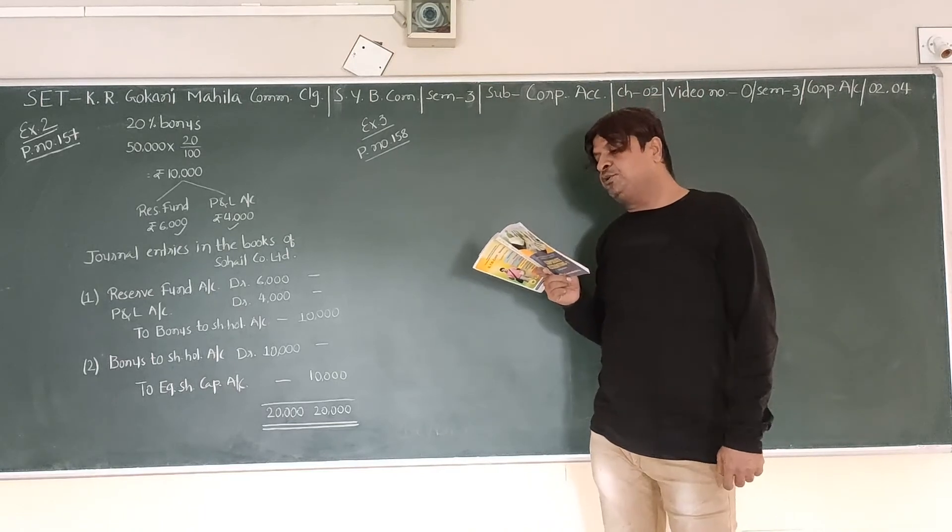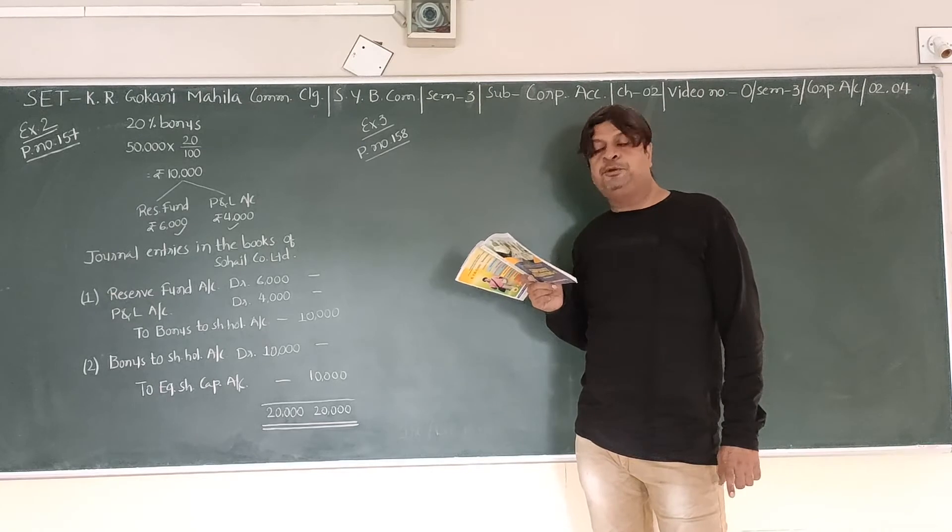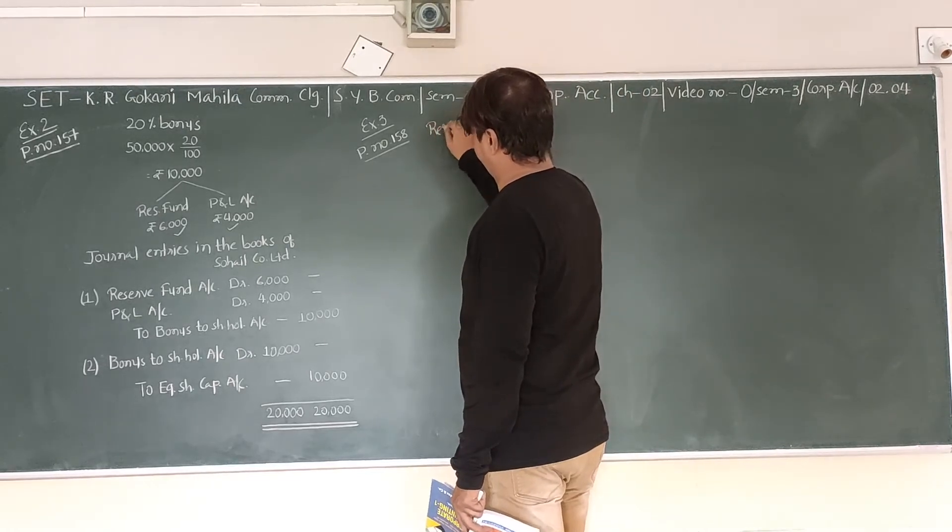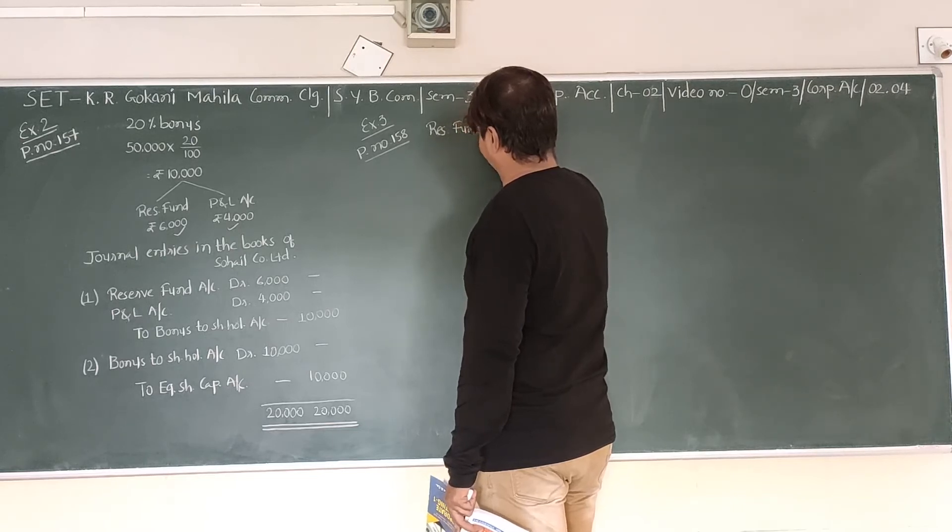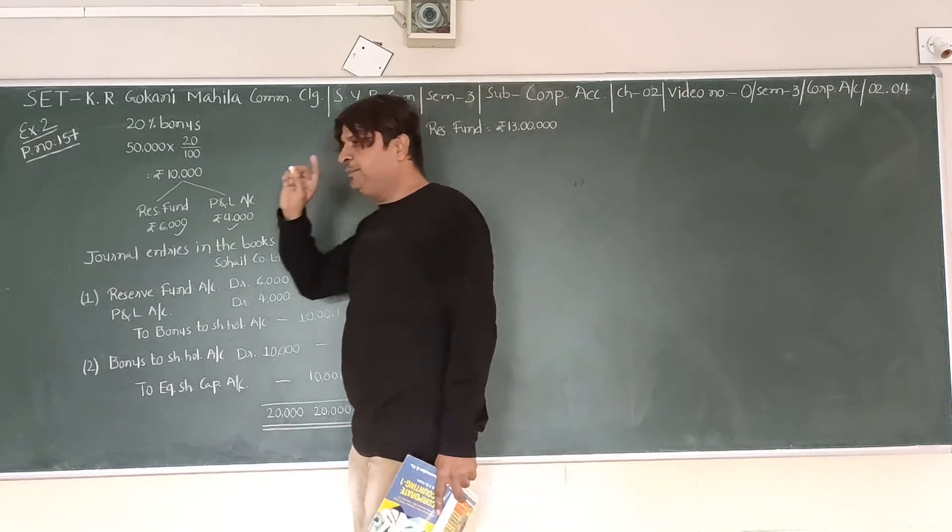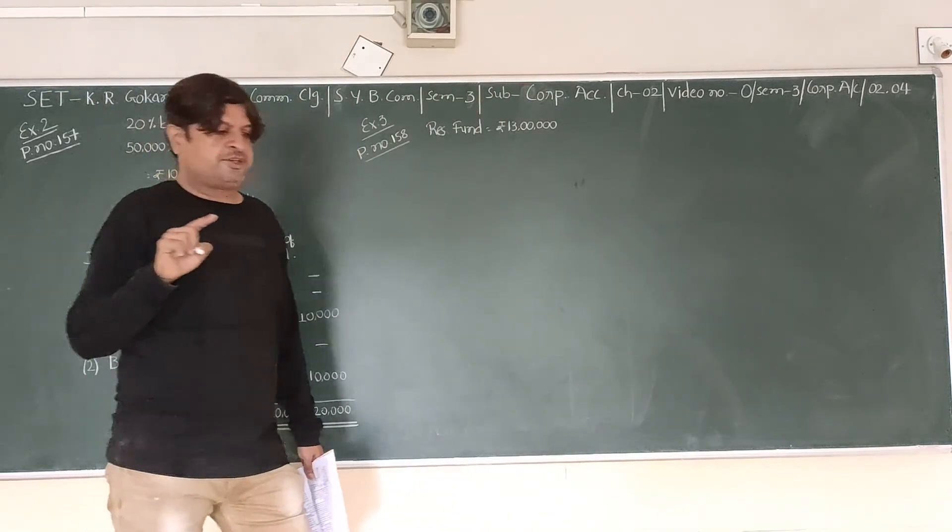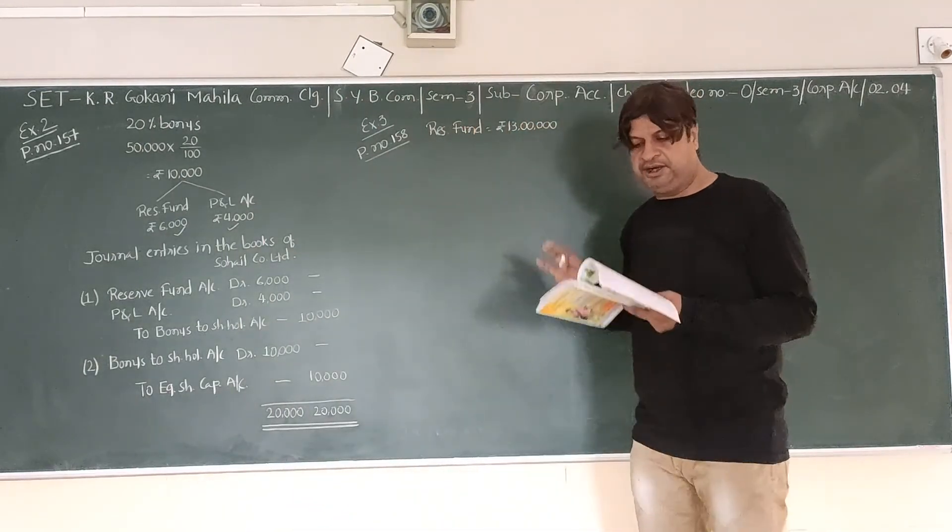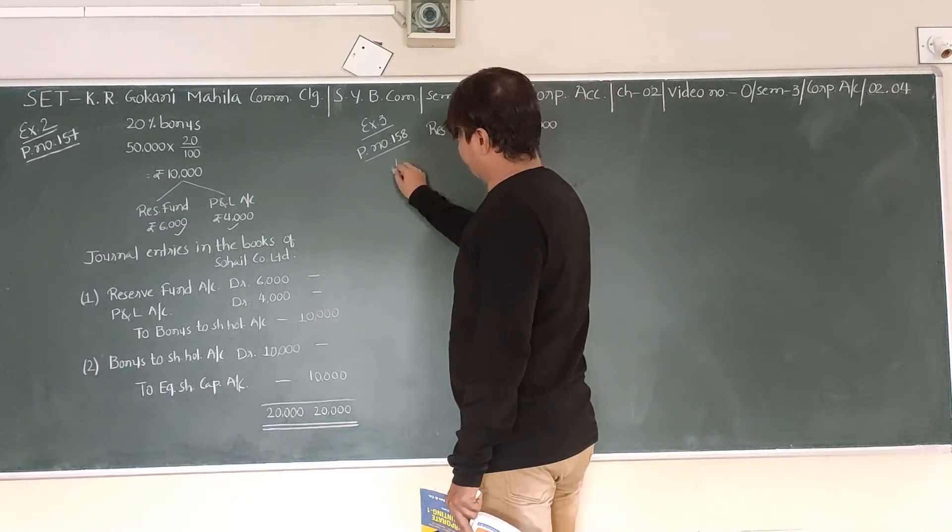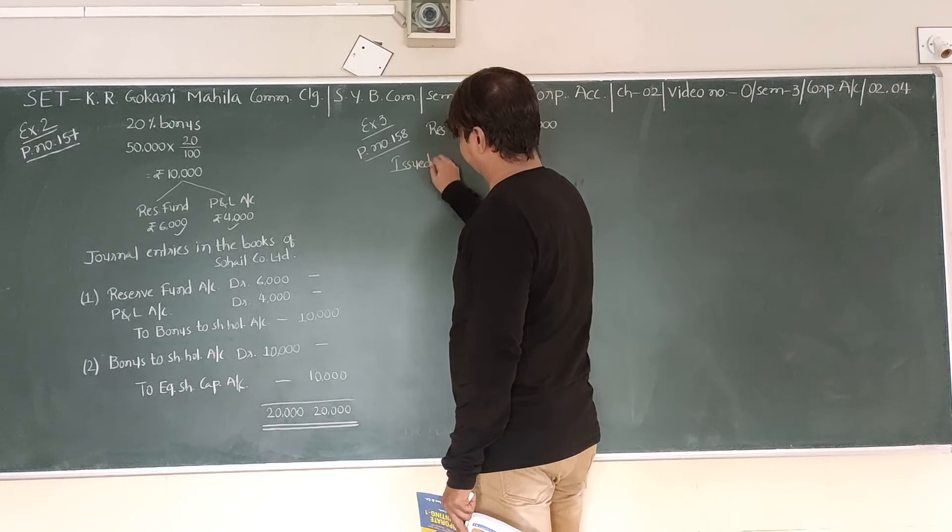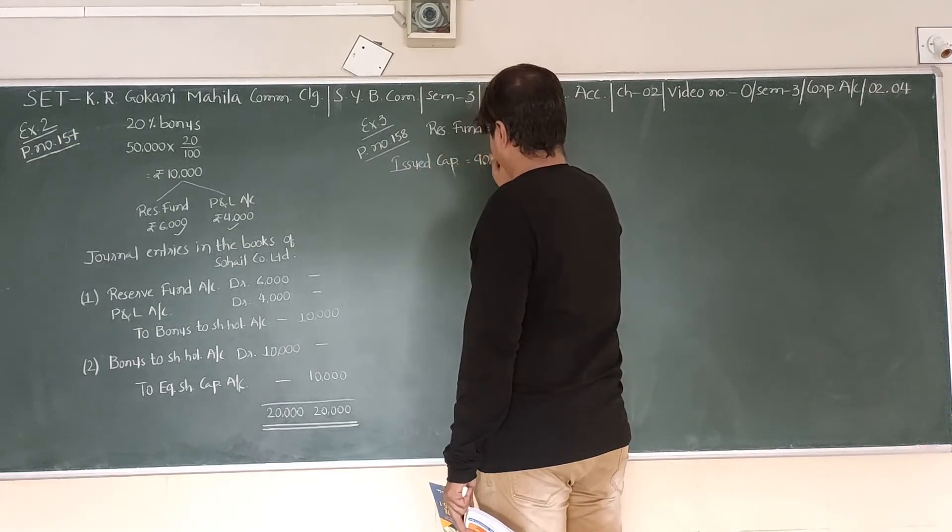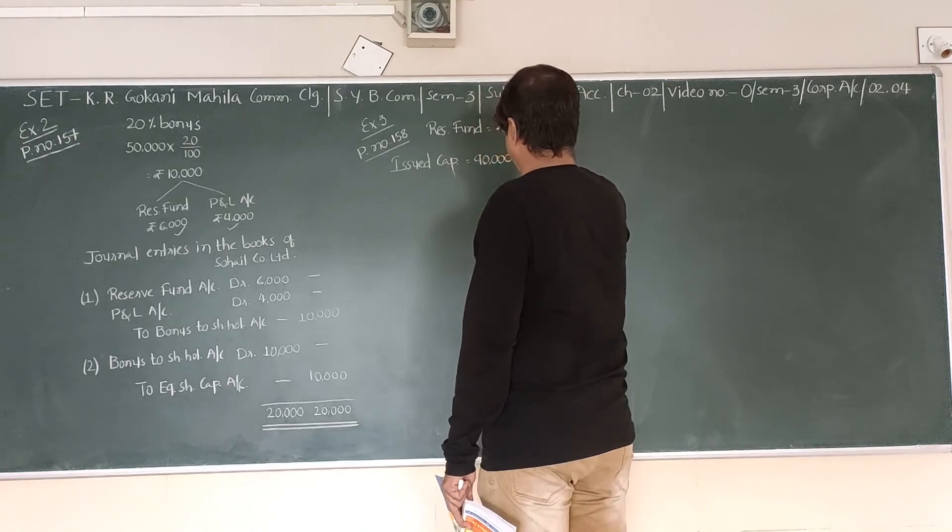Authorized capital includes 250,000 equity shares of rupees 10 each. Balance of Reserve Fund is 13,000. Authorized capital is not useful for us, never consider authorized capital, you have to just look at issued and subscribed capital only.